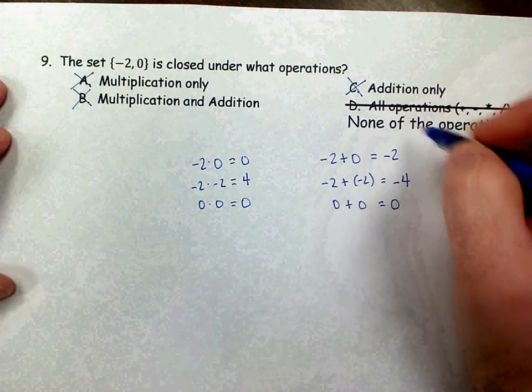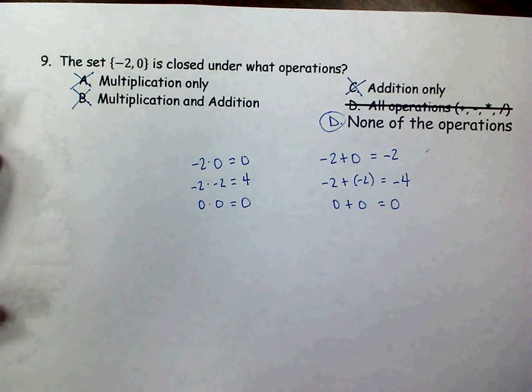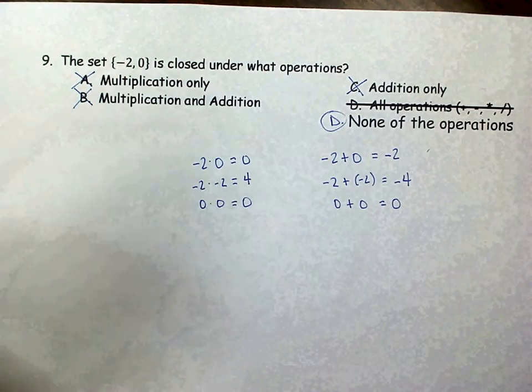So our option, it's been changed on your sheet, is D. None of those above. None of those operations are closed for that set.